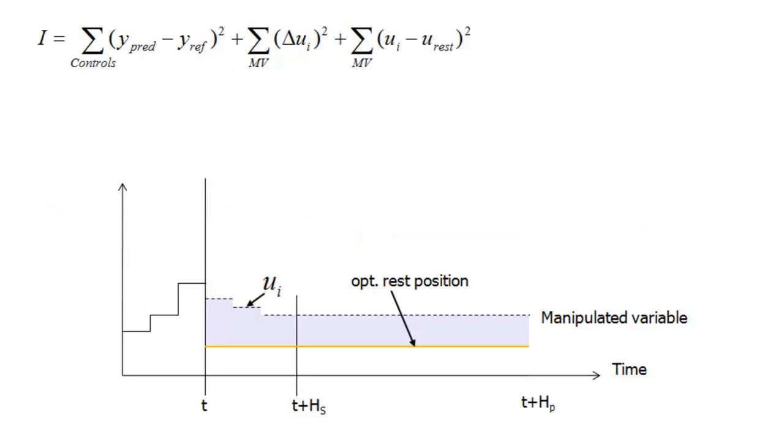Certain manipulated variables have optimal resting positions. For those, we use the same formula as for control variables. That is the difference between the future calculated value and the optimal resting value.